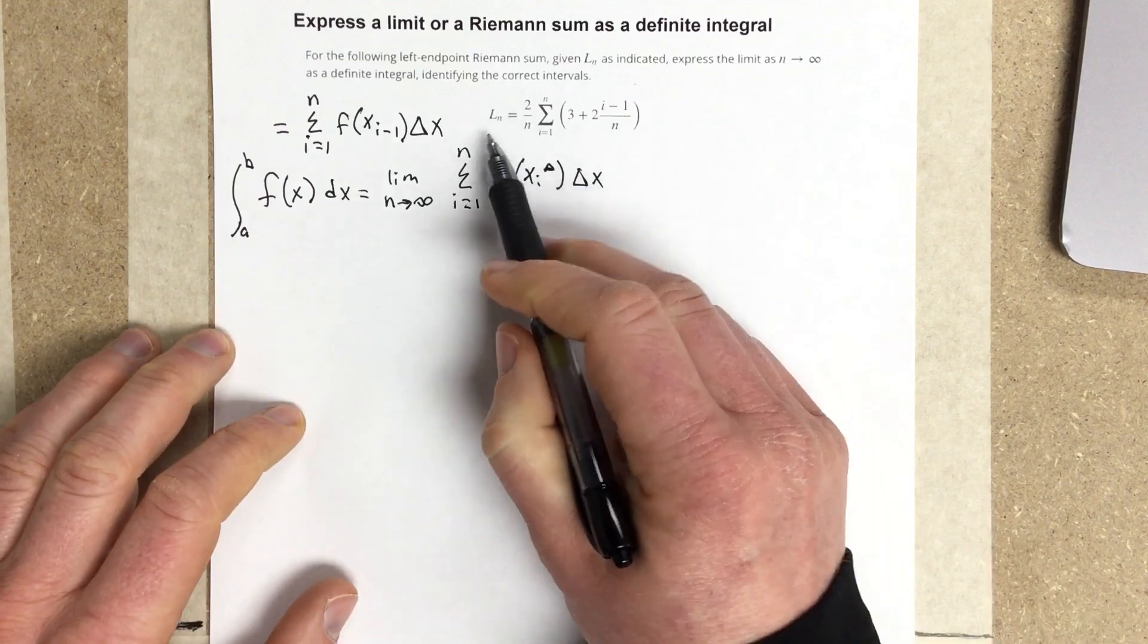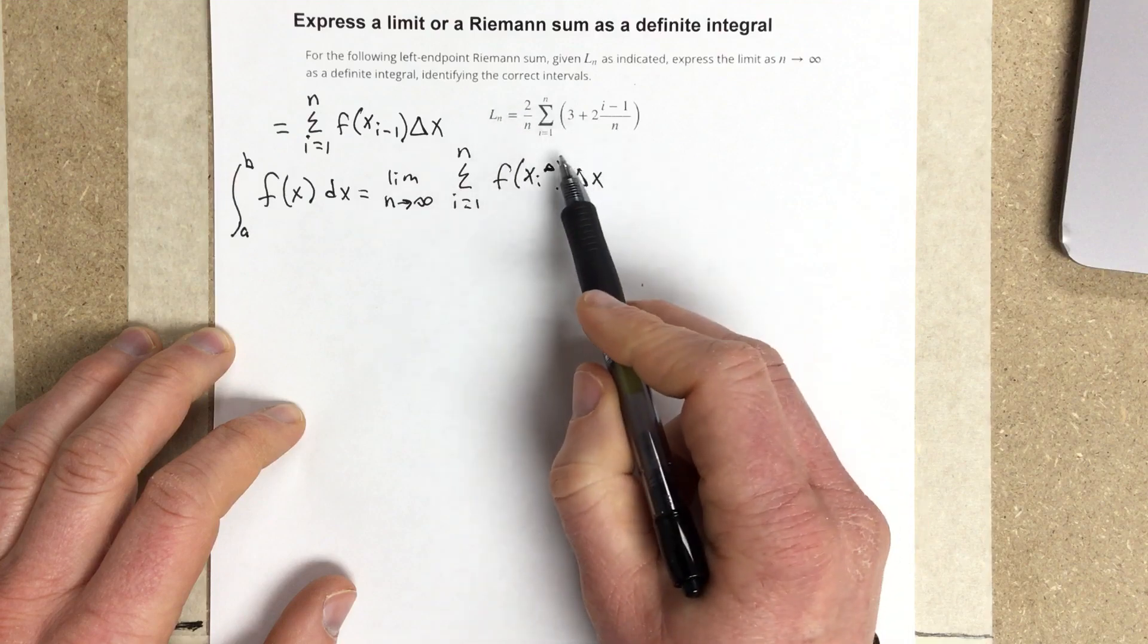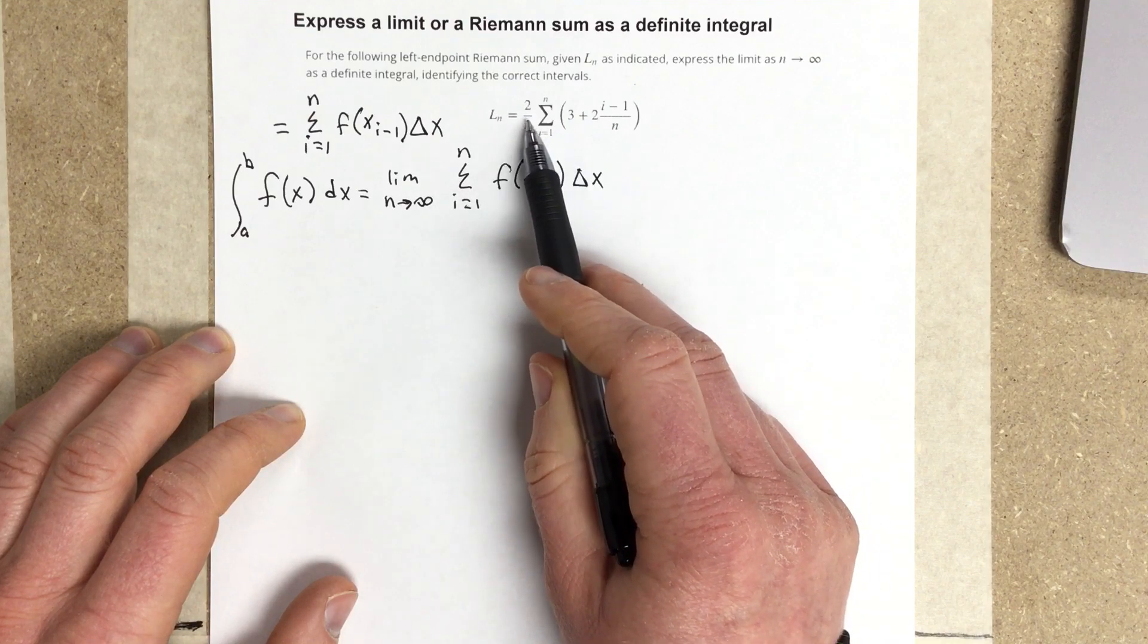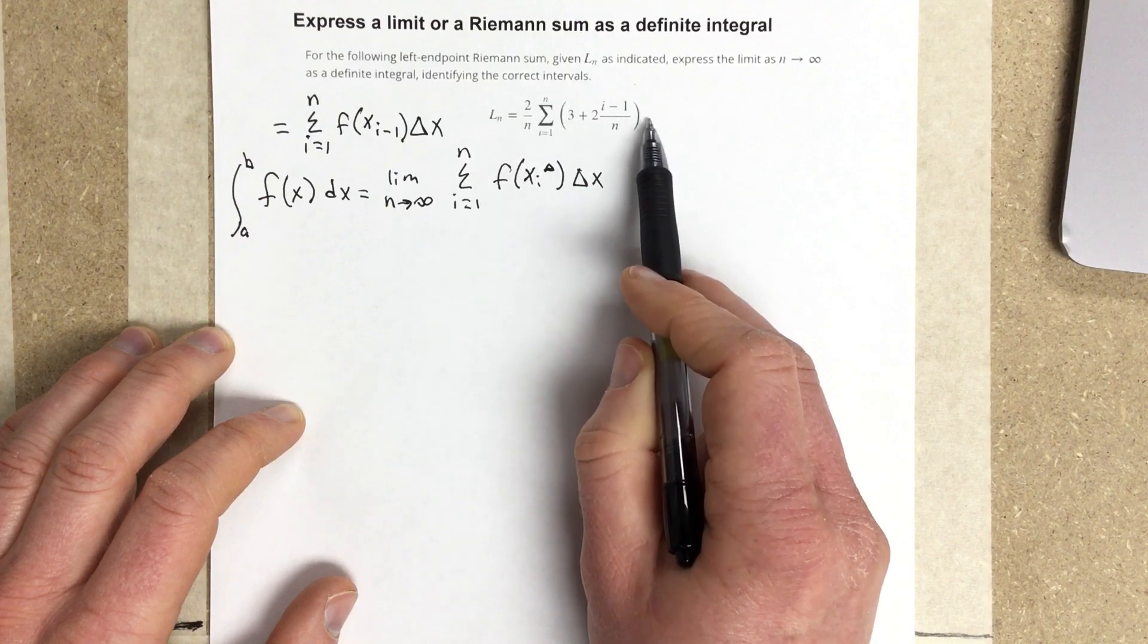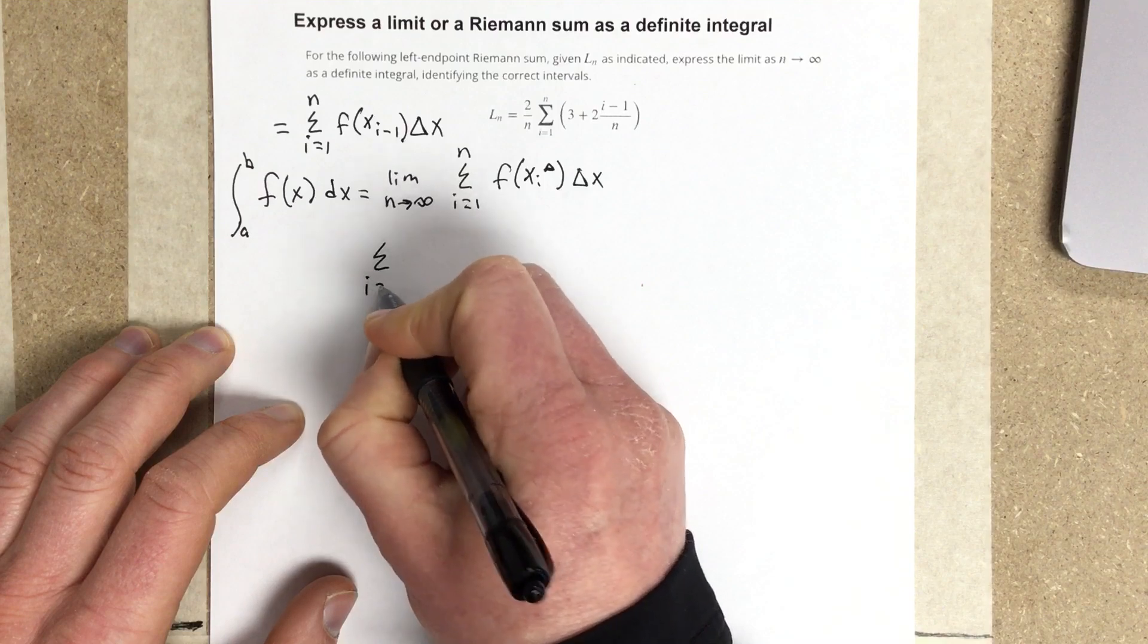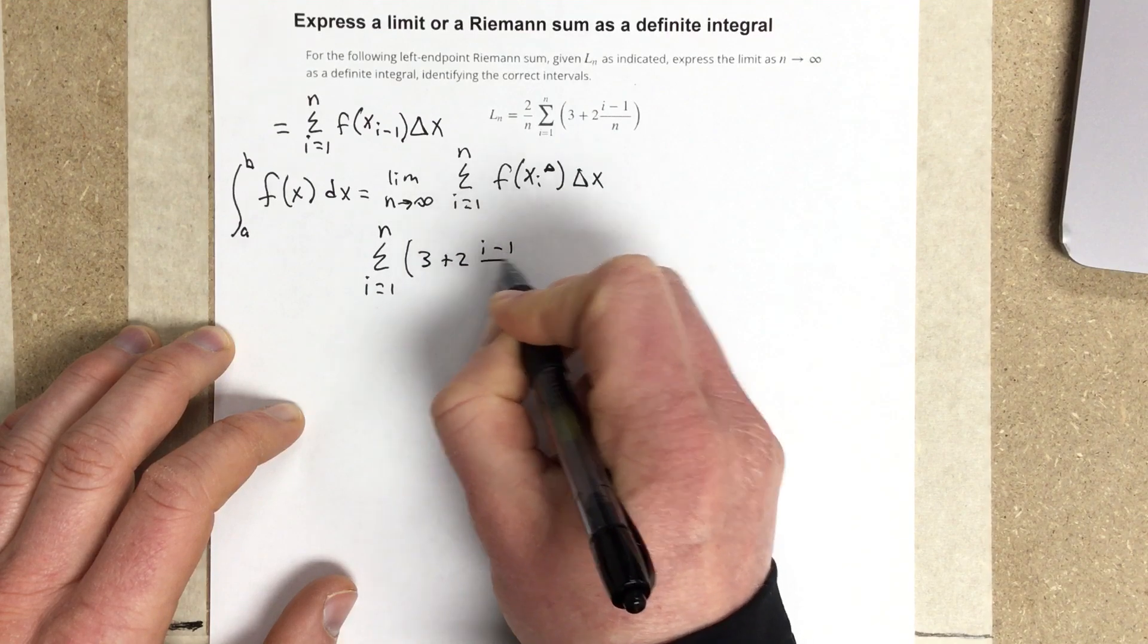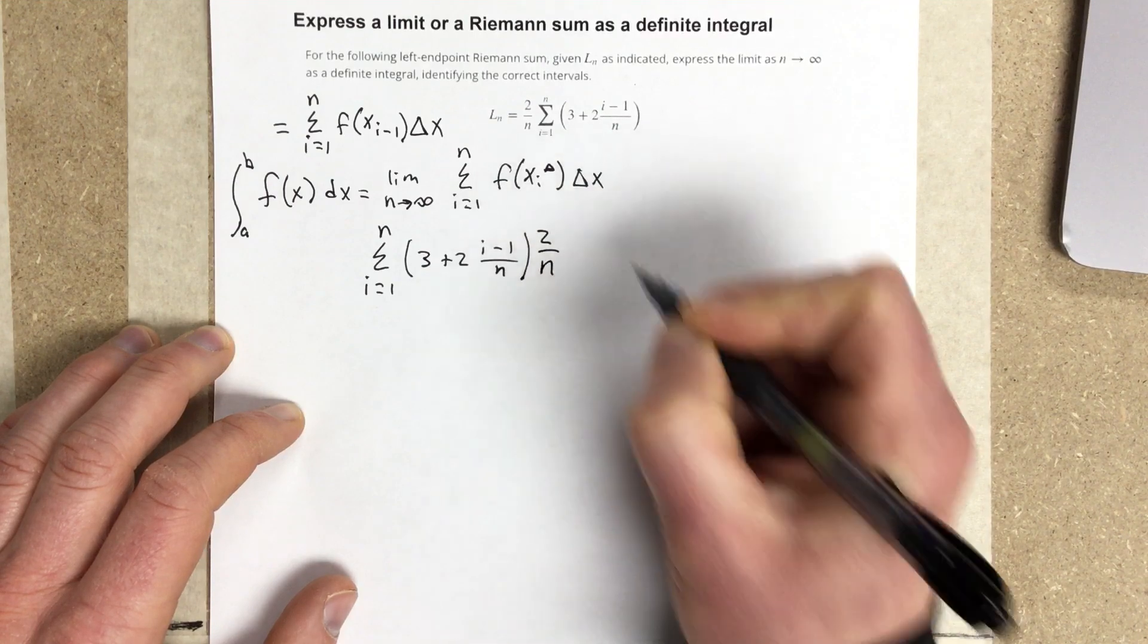And they give us this L sub n, which is basically this whole piece right here. It just ignores the limit. So, we're going to use the rules for summations to move this 2 over n inside here, and we're going to say that the summation of i equals 1 to n of 3 plus 2(i-1) over n.